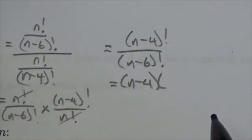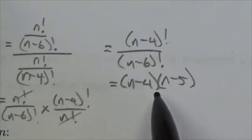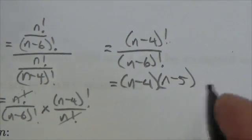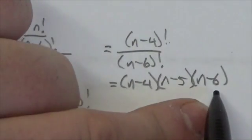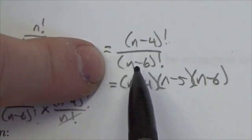If n is 20, 20 minus 4 is 16. Well, how do I go from 20 to 15, the next one? I would minus 5. How would I go to the next smaller number, which is 14? I would take 20 minus 6. So the next one is going to be n minus 6.